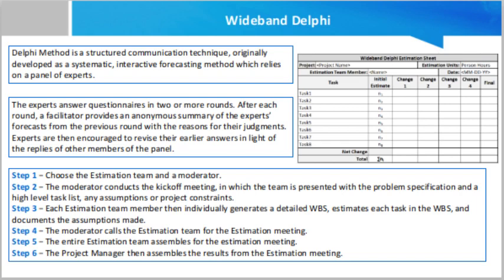Step 5.3 — each team member reads aloud the detailed task list that he or she made, identifying any assumptions made and raising any questions or issues. The task estimates are not disclosed. The individual detailed task lists contribute to a more complete combined task list. Step 5.4 — the team then discusses any doubts or problems they have about the tasks, the assumptions made, and any estimation issues.